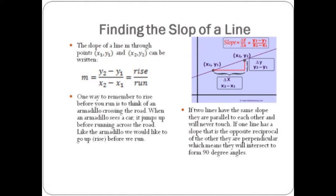Let's begin with finding the slope of a line. The slope of a line m through points x1, y1 and x2, y2 can be written as m equals the change in y over the change in x, or y2 minus y1 over x2 minus x1, which is also known as rise over run.